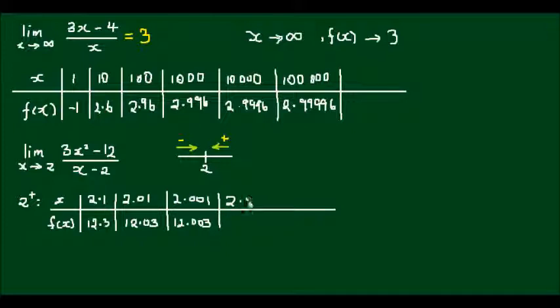And if I do one more, 2.0001, we'll get 12.0003. So it's clear that as x approaches 2 from the right, we get closer and closer to 12. But let's see if the same thing happens when we approach the value of 2 from the left.